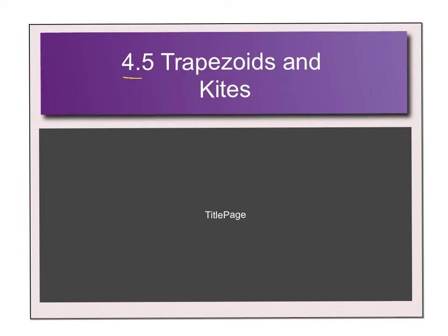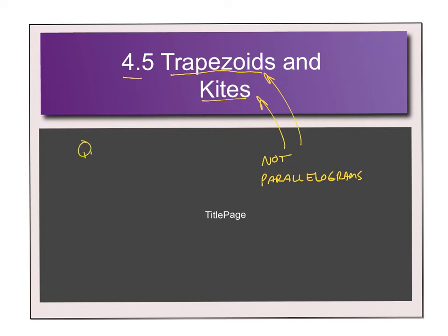We've talked a whole bunch about different four-sided figures, and trapezoids and kites are the last four-sided figures we cover. One of the biggest things I want you to know is that these are not parallelograms. They don't fall under that category, so the five things that are true of a parallelogram are not necessarily true in trapezoids and kites. They're still quadrilaterals — still four-sided figures — but they're not parallelograms.